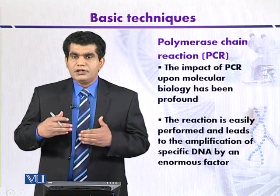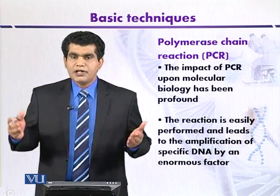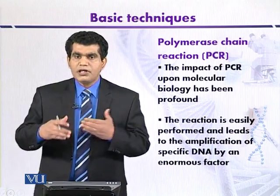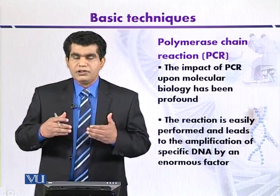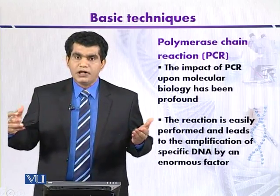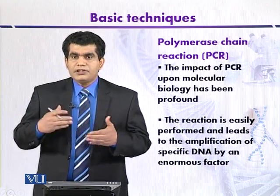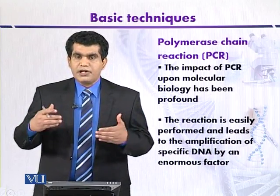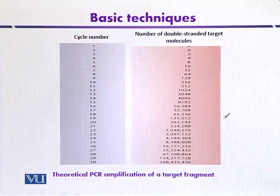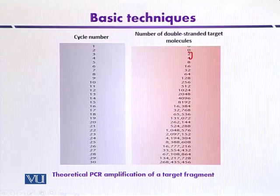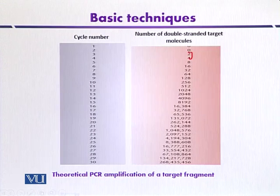By subjecting DNA to repeated cycles of denaturation, hybridization, and extension, we can produce millions of copies of the target DNA within a short period of time — like two to three hours. This diagram shows theoretical PCR amplification of a target fragment. Starting with one or two fragments, after 30 cycles of denaturation, annealing, and extension — taking two to three hours — we may have millions of copies of the target DNA.